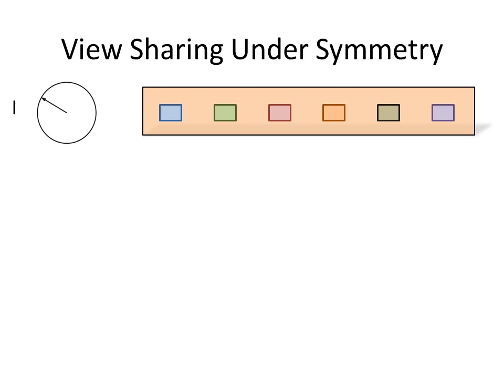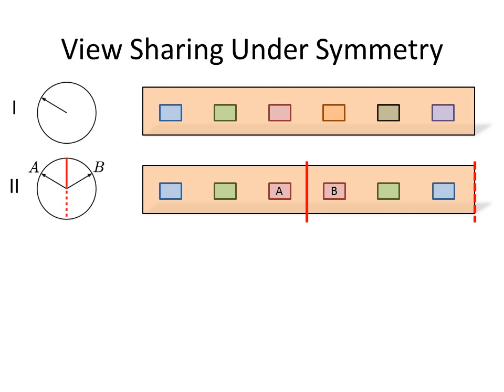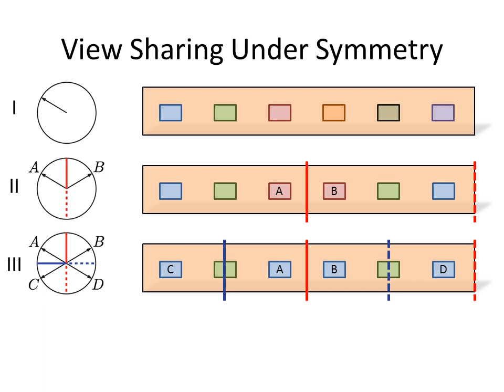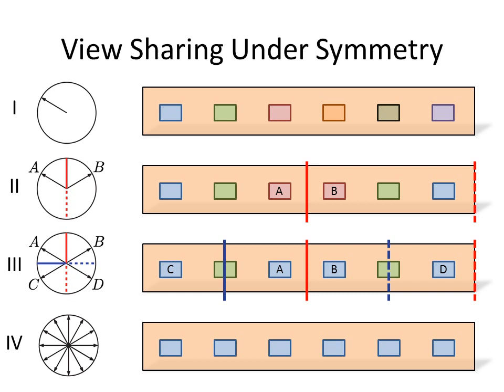If we know the symmetry structure of a place, we can share training examples across different views. For type 1, there is no symmetry, so there is no sharing across views. With type 2 symmetry, any two symmetric views can be placed in the same view category to train the viewpoint classifier, which effectively doubles the size of the training dataset. With type 3 symmetry, even more sharing is possible. With type 4 symmetry, there is no need to learn the alignment between panoramas or train a viewpoint classifier, since all views are identical and the model cannot do better than random guessing.